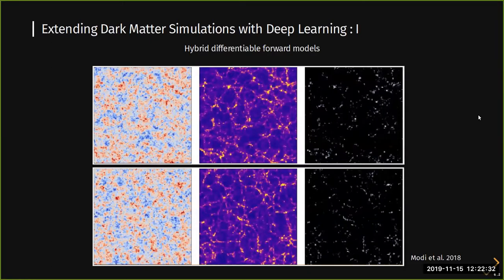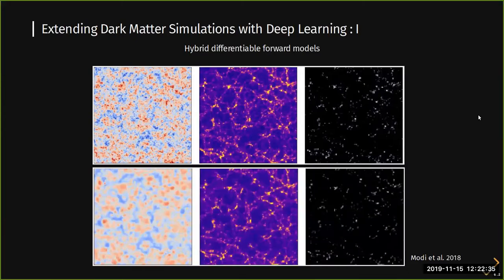N-body simulations can be made differentiable, but halo-finding algorithms and galaxy distribution approaches are not. That's where deep learning helps — you can develop hybrid differentiable forward models. We train a neural network to go from the final dark matter field to the galaxy density. With this hybrid model you can reconstruct initial conditions: start with a random guess, write down the posterior, optimize it, and reconstruct initial conditions correctly on large scales. On small scales dominated by noise, things look washed out.